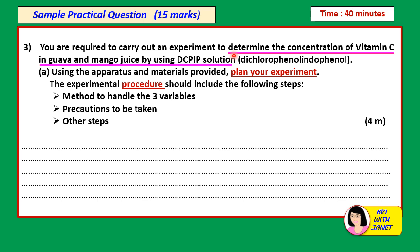The first thing you do is underline the objective of the experiment. It begins with words like 'carry out an experiment to determine,' 'to study,' 'to compare,' and so forth. From the aim of the experiment, you can determine the MV and the RV. The MV here is the types of fruit juices — whether it's guava or mango juice. And your RV is the concentration of vitamin C in the fruit juices.